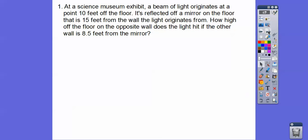So we're going to use this kind of model and solve these application problems. Here's the first one. At a science museum exhibit, a beam of light originates at the point 10 feet off the floor. So we've got 10 feet off the floor. So let's imagine we're over here and we're up at 10 feet right here. So here's a wall. It's being reflected 10 feet off a floor and it reflects off a mirror on the floor that's 15 feet away. So this little area is 15 feet. Off the wall, how high off the floor off the opposite wall does the light hit if the other wall is 8.5 feet from the mirror? Let's get a picture going here.